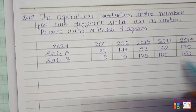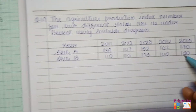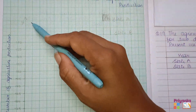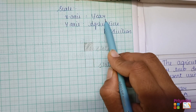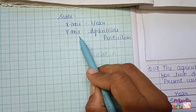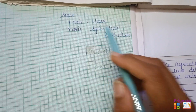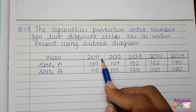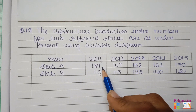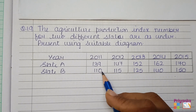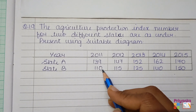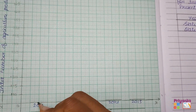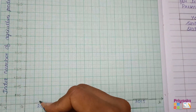First, prepare the x-axis and y-axis, and make a scale for what you are keeping on each axis. For the year 2011, the agriculture production index of state A is 139 and for state B it is 110. We will draw a multiple bar diagram for these values.